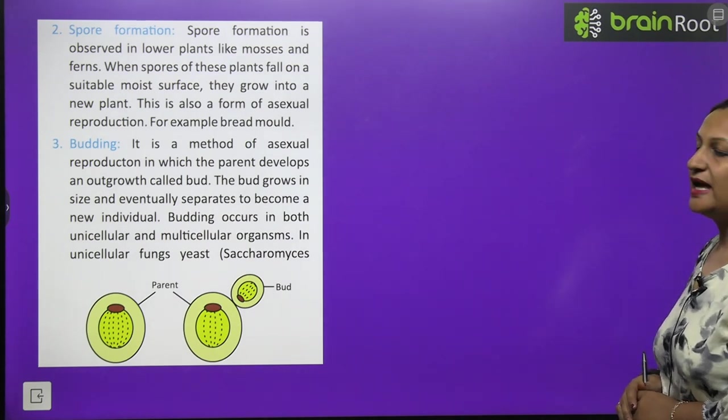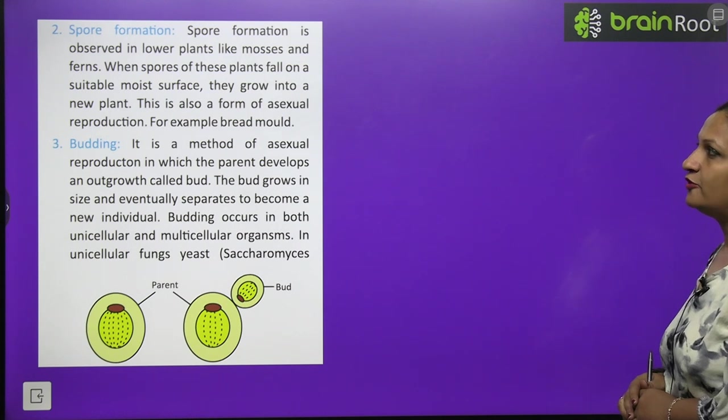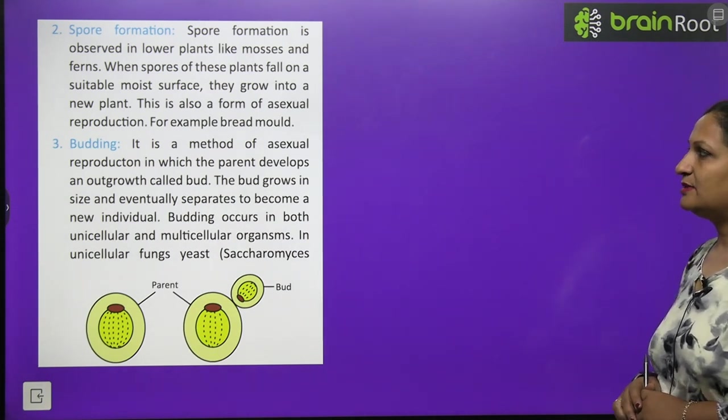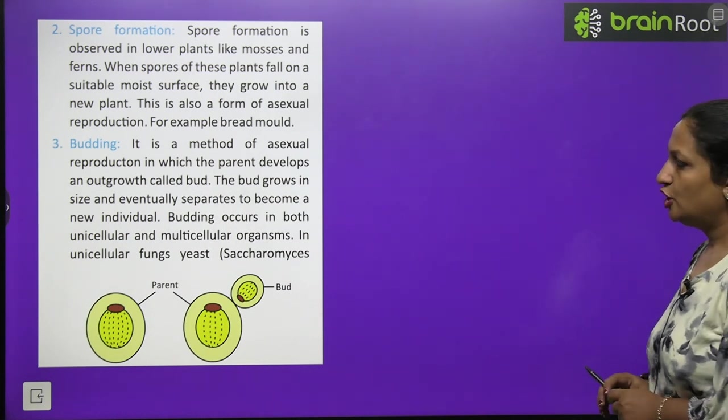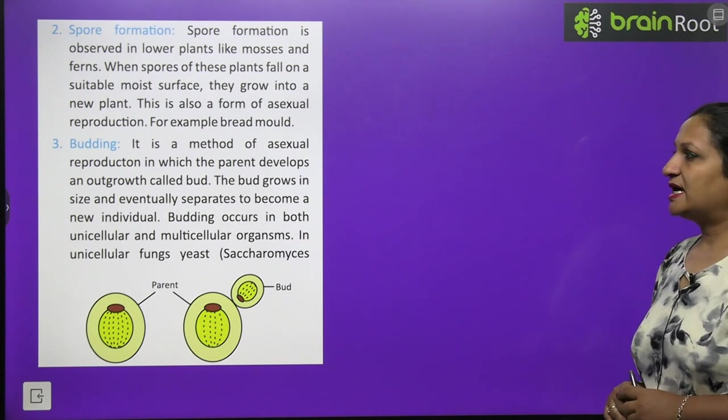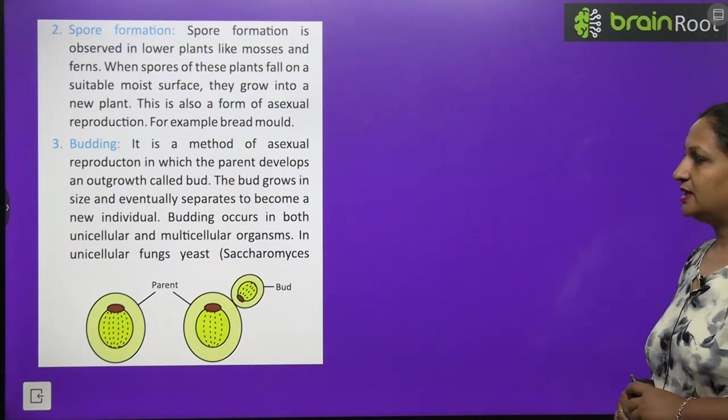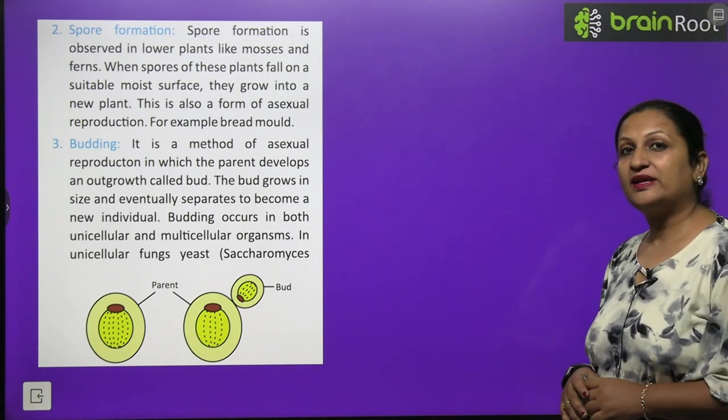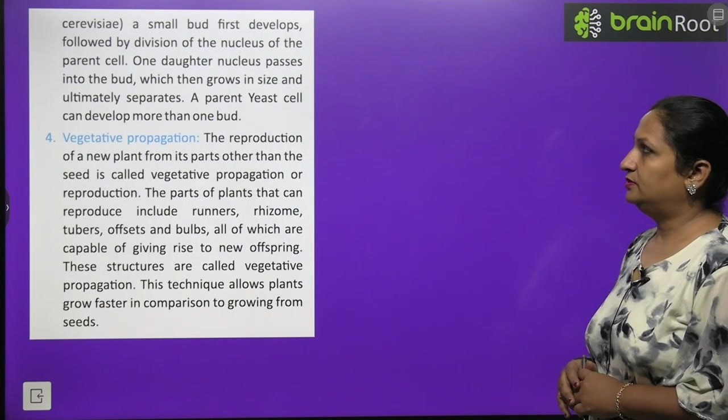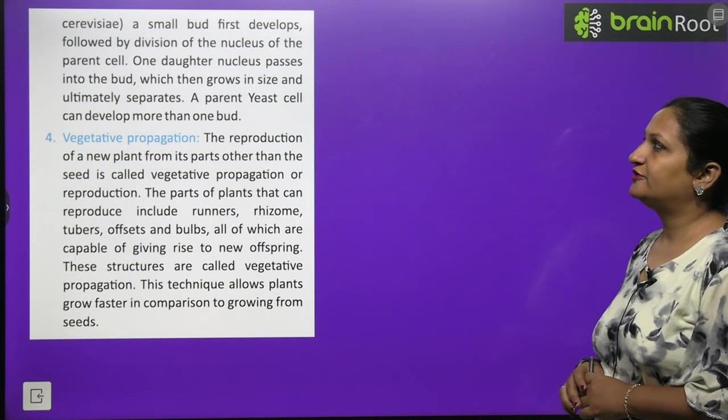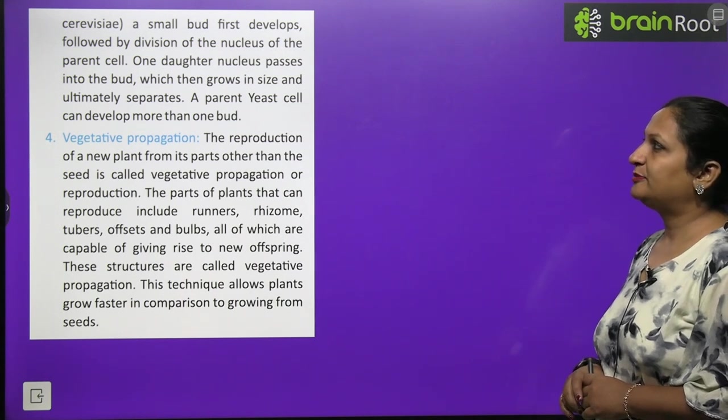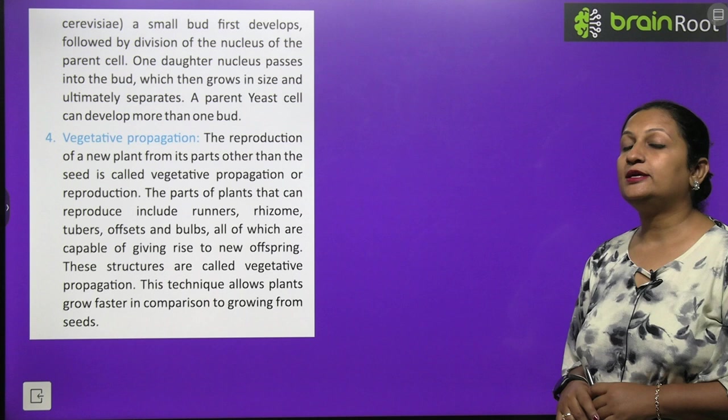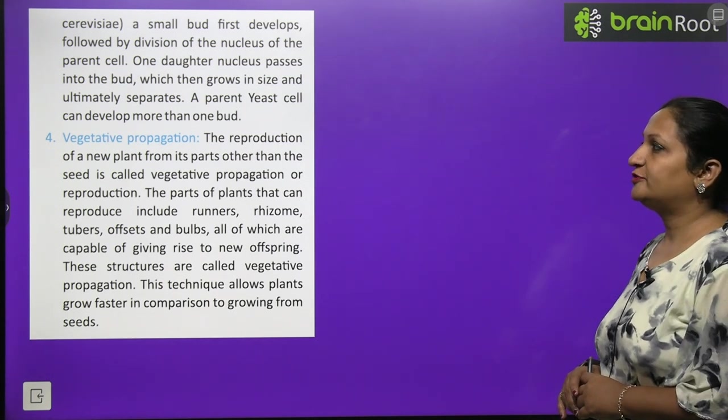Spore formation is observed in lower animals like mosses and ferns. When spores of these plants fall on suitable moist surface they grow into new plant. Budding is a method of asexual reproduction in which parent develops an outgrowth called bud. The bud grows in size and eventually separates to become a new individual. Budding occurs in both unicellular as well as multicellular organisms like yeast and water plant hydra. A small bud first develops followed by division of nucleus of the parent cell. One daughter nuclei passes into the bud which then grows in size and ultimately separates. A parent yeast cell can develop more than one bud.